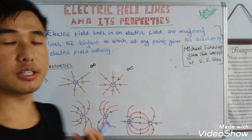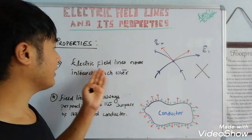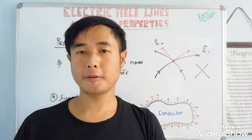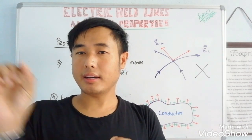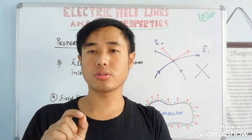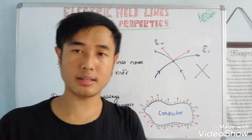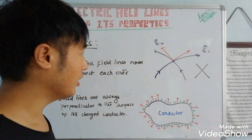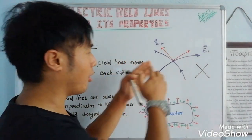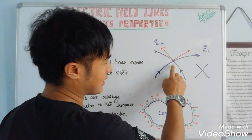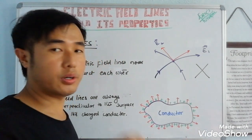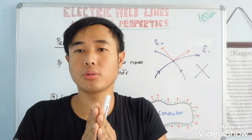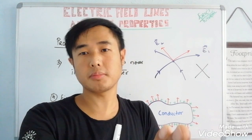Property number three: electric field lines never intersect each other. At any particular point, only one tangent can be drawn — this is a basic theorem from geometry. If two lines were to intersect, at the point of intersection there would be two possible directions.